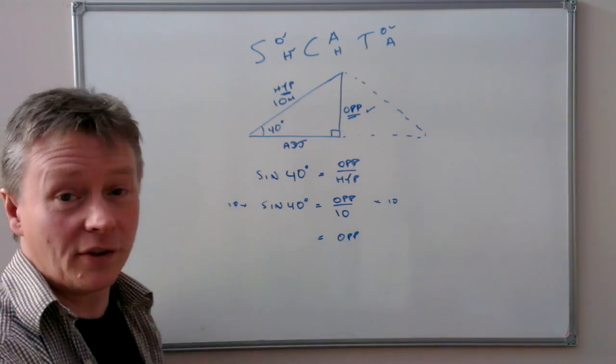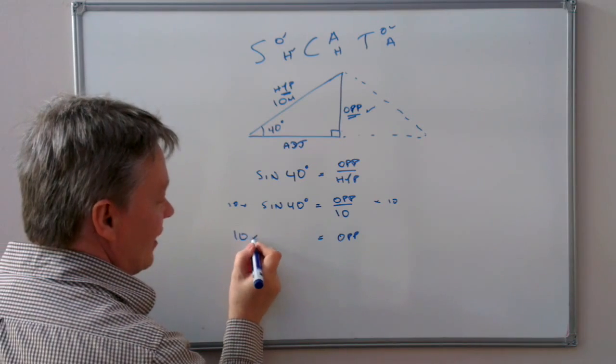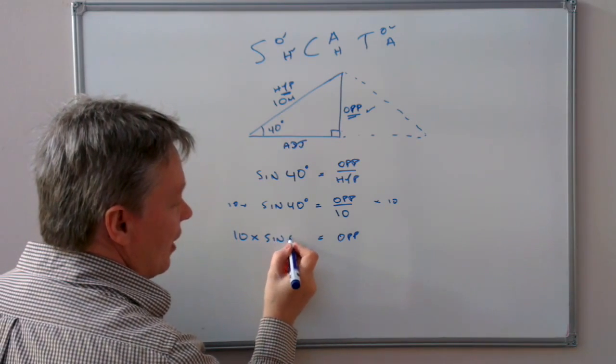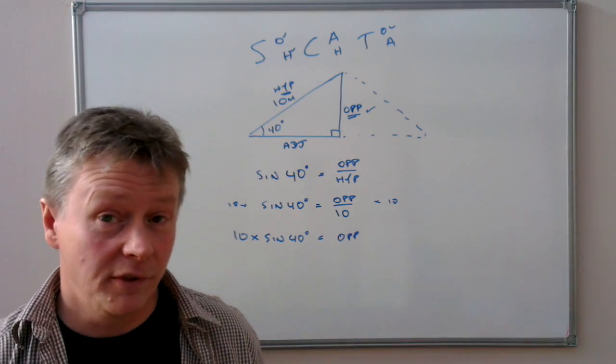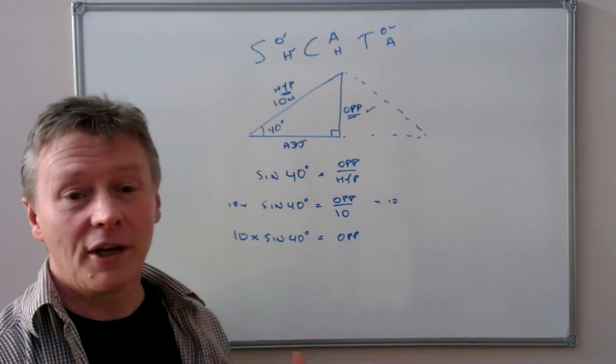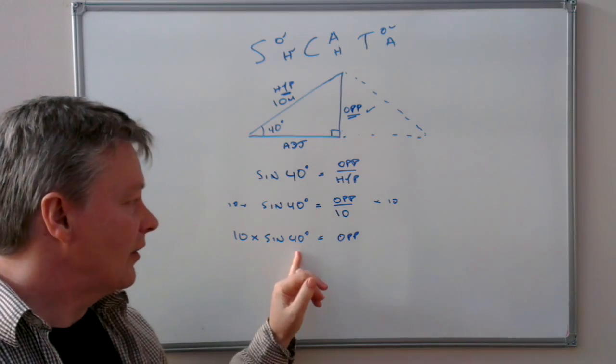And on the other side I've got 10 times the sine of 40 degrees. Now I can use a calculator, and providing I key in the numbers correctly, I should get—I'm going to have to refer to my notes here—but I should get 6.4287.